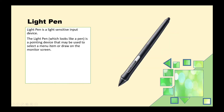The next input device is the light pen. The light pen is a light-sensitive input device shaped like a pen. It can be used to draw information directly on the screen and to select items.